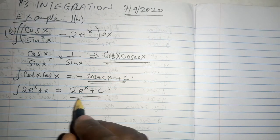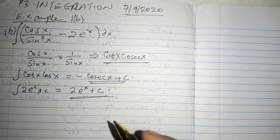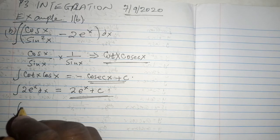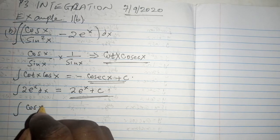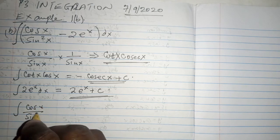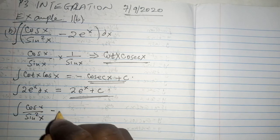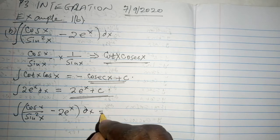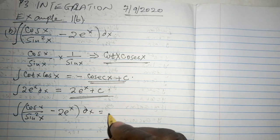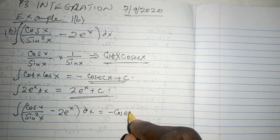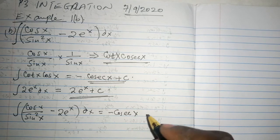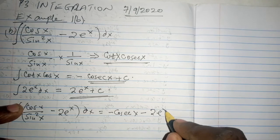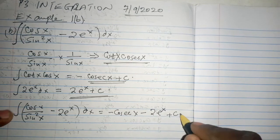We have this part and this part and we only need to combine the two. So the integral of the cosine of x over the sine squared of x minus 2e^x with respect to x is simply negative cosec x minus 2e^x plus c.